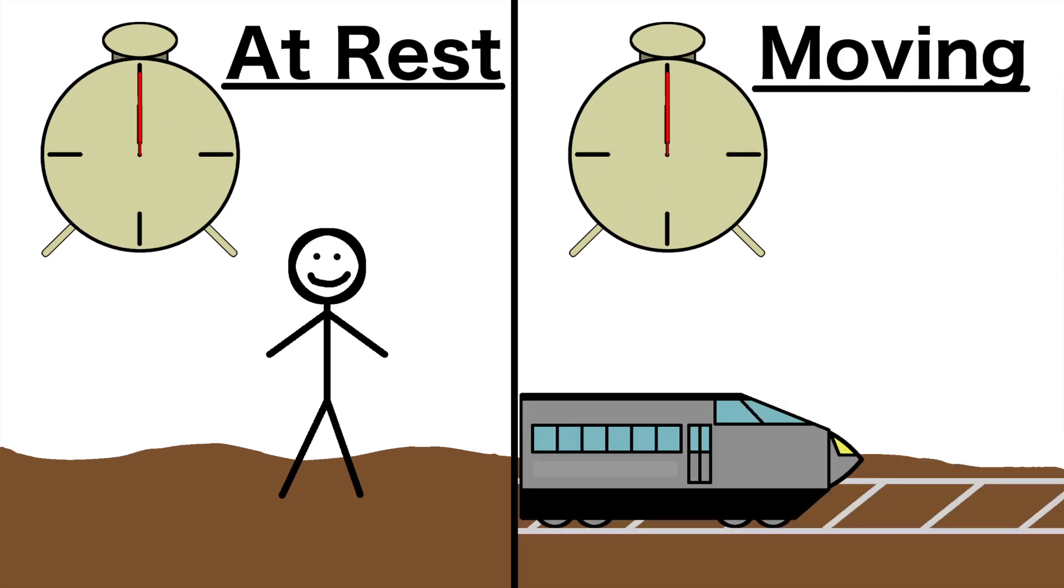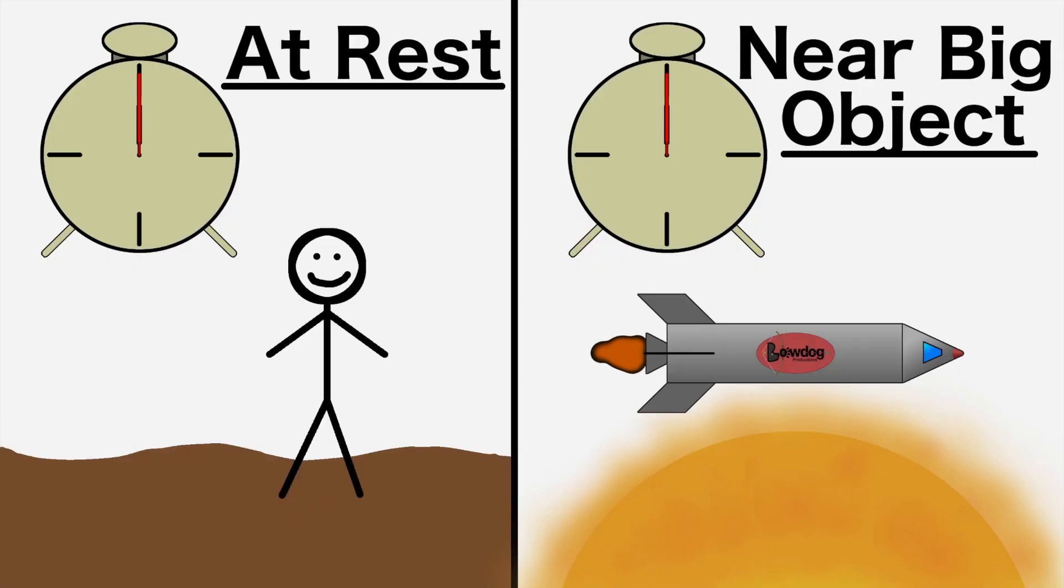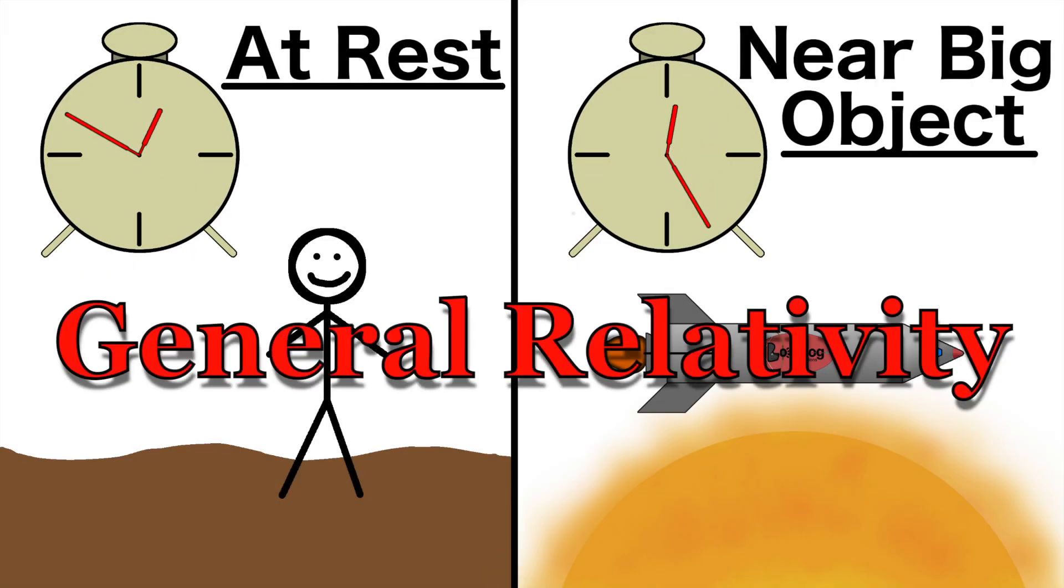The first scenario, dealing with speed, comes from special relativity, and the second scenario, dealing with gravity, comes from general relativity.